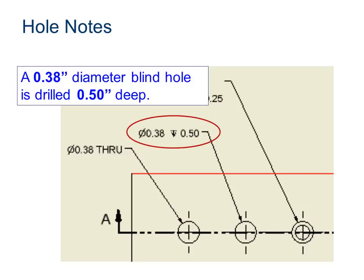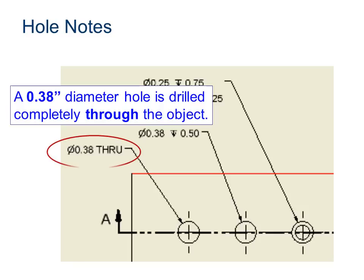Next, we have the annotation for a blind hole. So here, we have a hole that has a diameter of 0.38, and it goes down half an inch, 0.5. Here, we have a hole that is 0.38 diameter through. So you'll notice you don't use the depth indicator when you have a through hole, or a hole going all the way through the part.